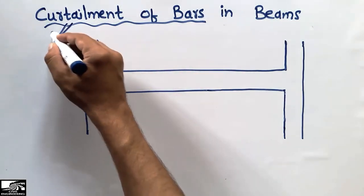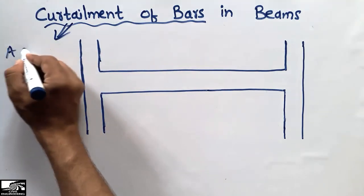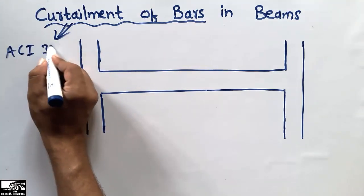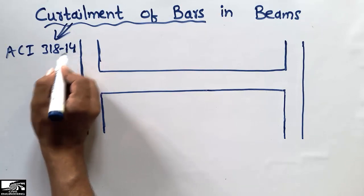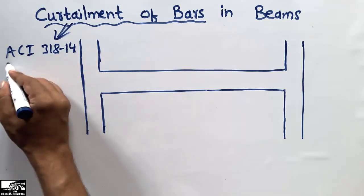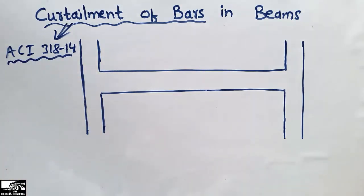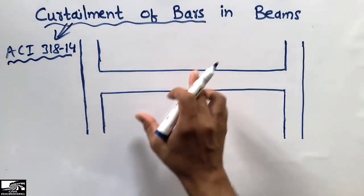In this lecture I will show you the curtailment of bars according to the American Concrete Institute ACI 318-14. According to this code, I will show you the curtailment of bars.